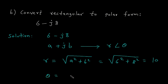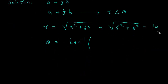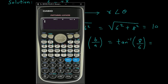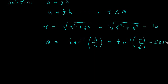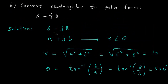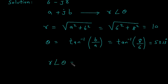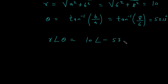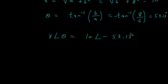To find theta: theta equals tan inverse of B by A, so theta equals tan inverse of 8 by 6, which equals 53.13 degrees. Here we can see the sign is minus, so R at an angle of theta equals 10 at an angle of minus 53.13 degrees. The final answer is 10 at an angle of minus 53.13 degrees.